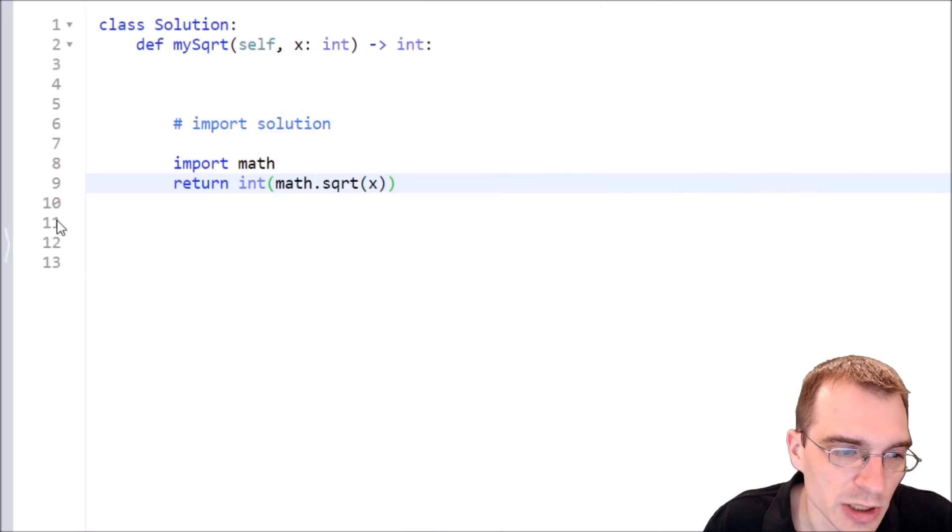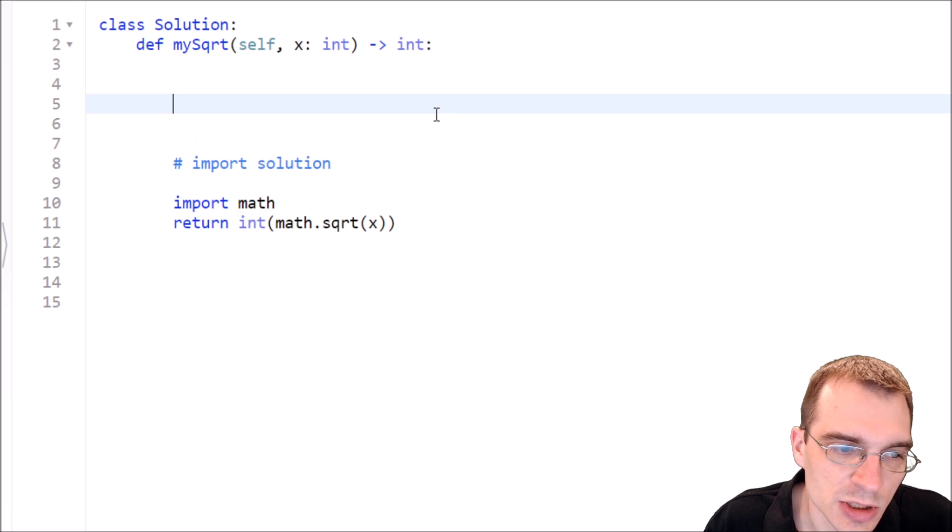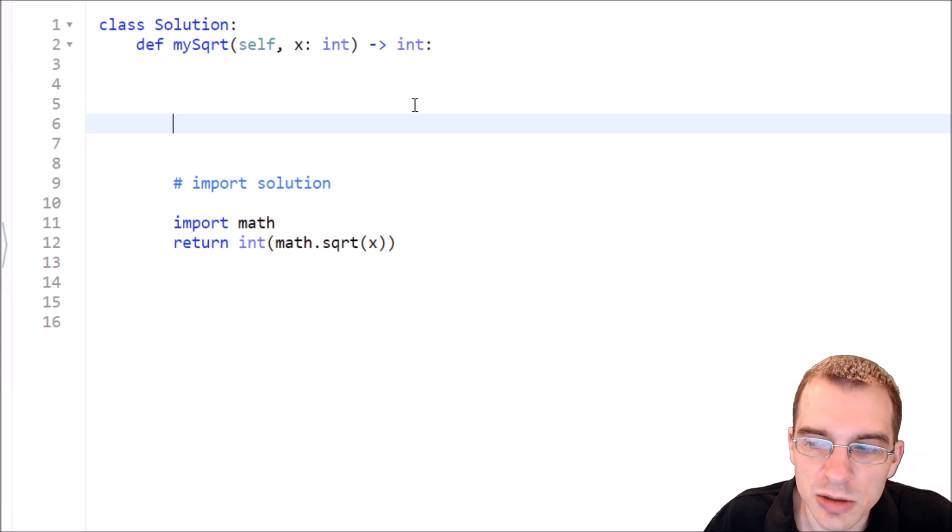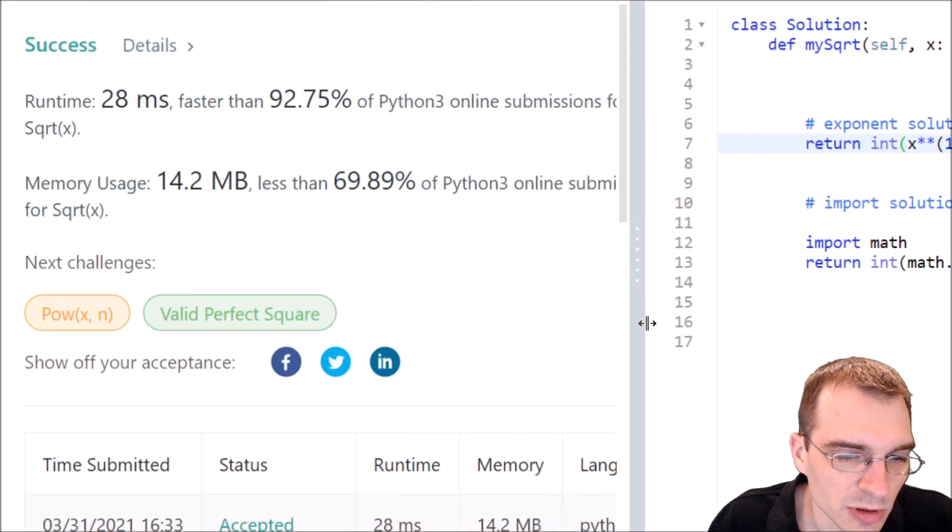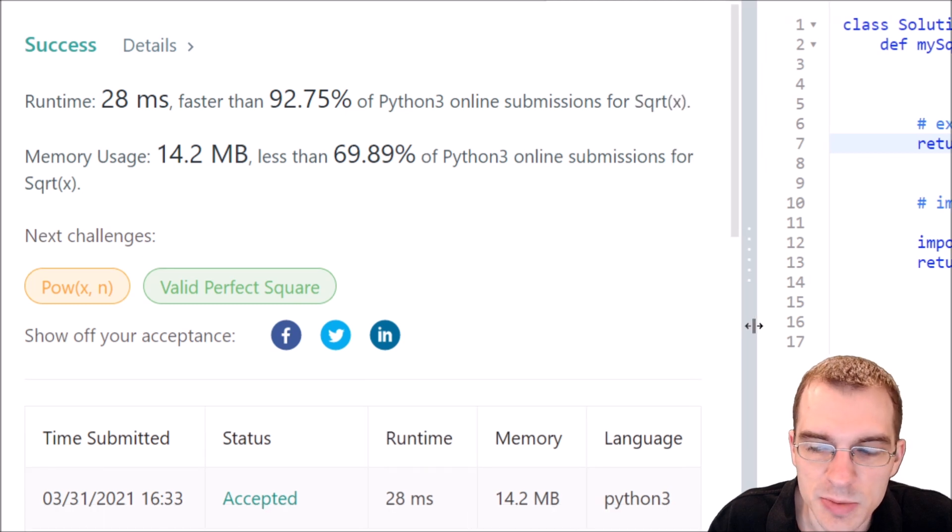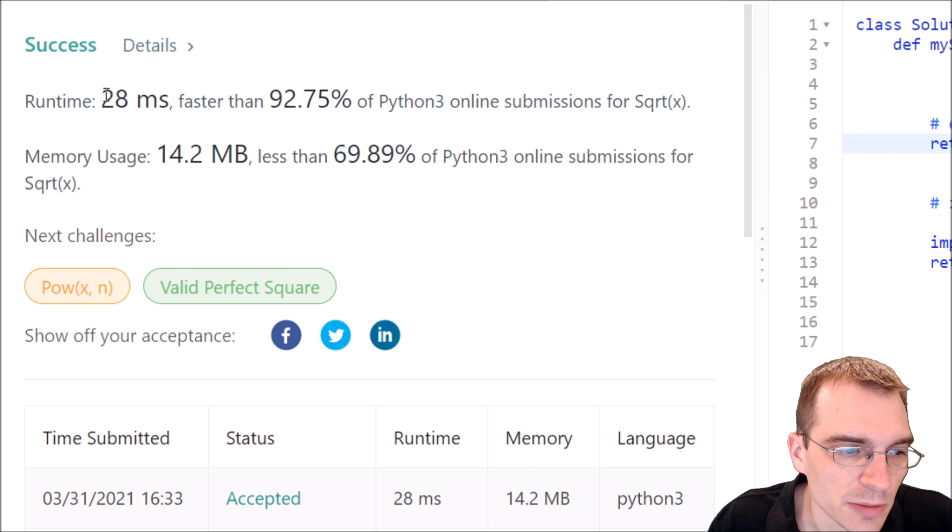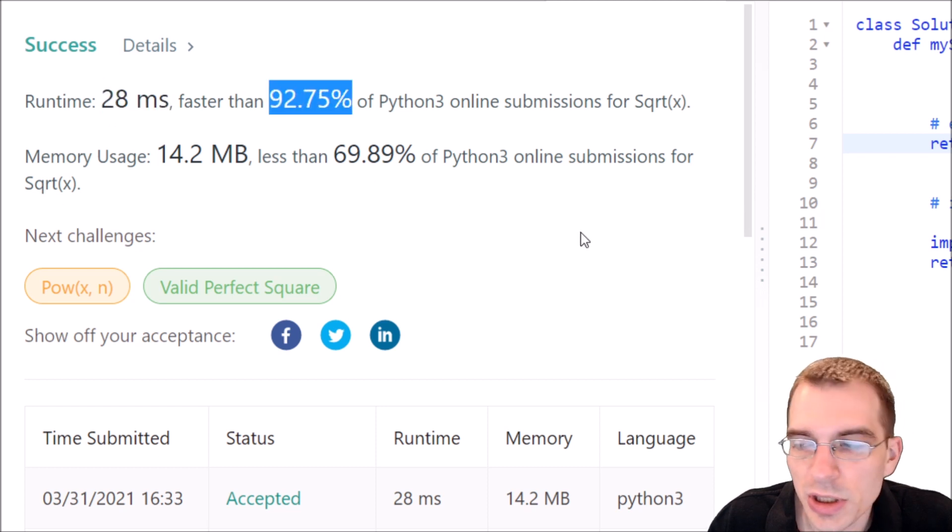But I guess there's probably other ways to solve this. One other very simple way to do this without even importing math is use exponentiation. So we could say exponent solution. The square root of a number is the same as that number raised to the one half power. So all we'd have to do is return int of x to the one half. Let's submit that. So for some reason, that run was a little bit quicker than the math one, I guess because we didn't have to import the math module first or something. 28 millisecond runtime faster than 92% of other Python 3 submissions.